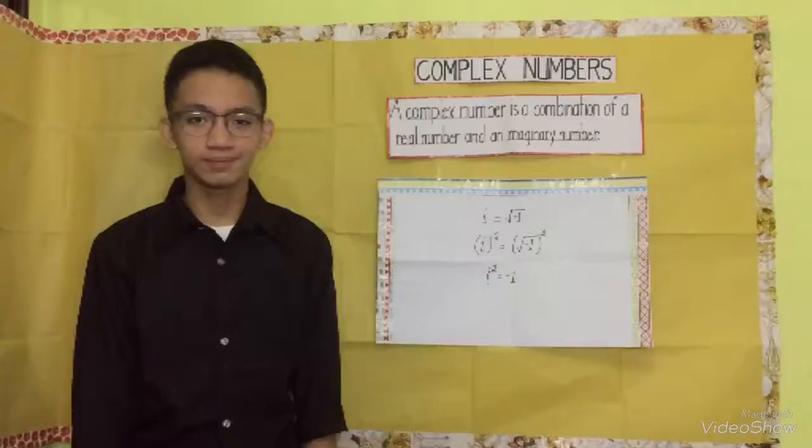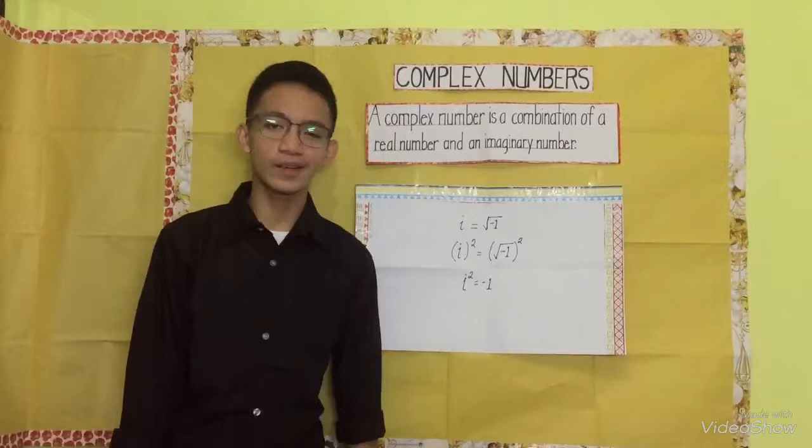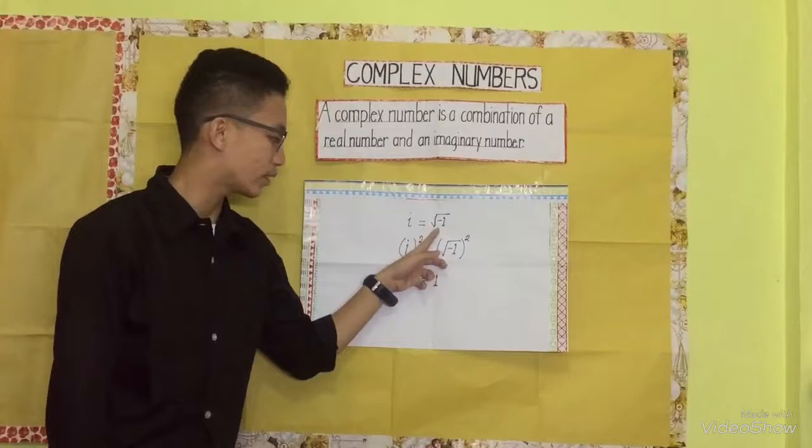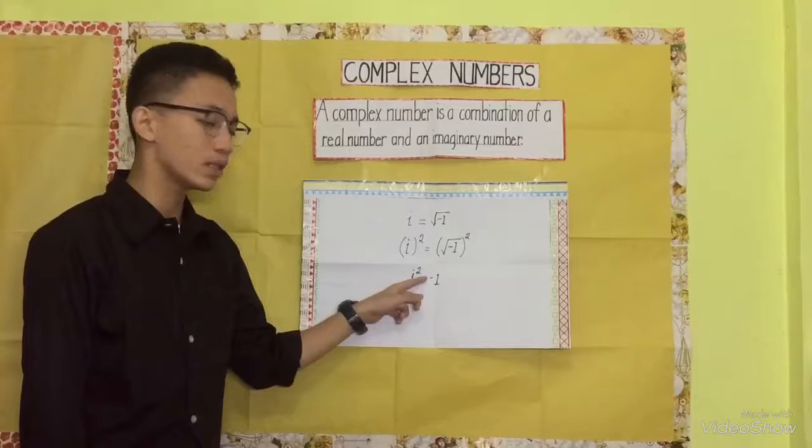An imaginary number occurs when the radicand of a radical expression is a negative number. The letter i stands for imaginary number and is equal to the square root of negative one. If both sides are squared, the result is: i squared is equal to negative one.